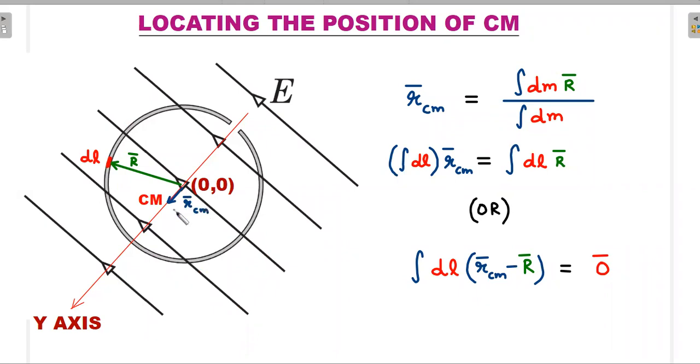Imagine the position vector of that center of mass which is slightly shifted is called r_cm bar. Now what we are going to do is try to locate the position vector of the center of mass using a standard formula that we learn in your regular classes. The r_cm bar is given by integration of all dm elements multiplied by the position vectors r bar.